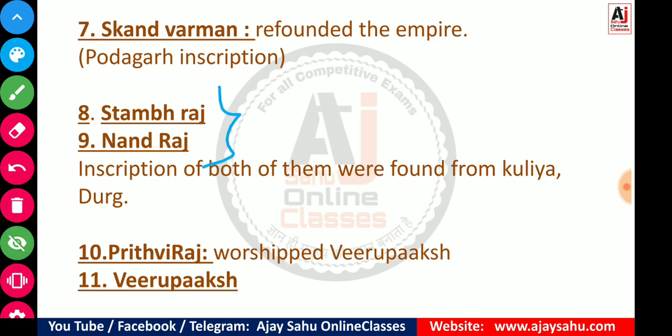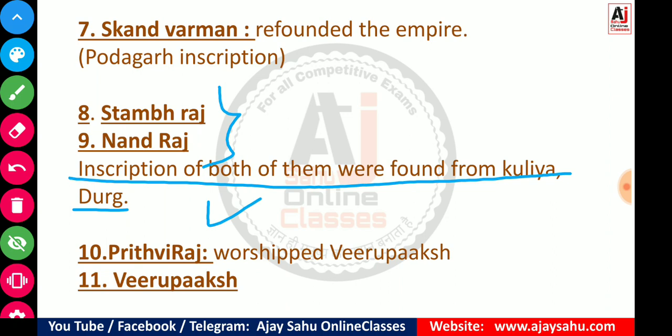Next we have Stambhraj and Nandraj — remember them as a pair. The inscriptions of both were found from Kuliya Durg. After them come Prithvi Raja and Viru Baksh. Prithvi Raja was a worshipper of Virubaksh — a form of God Shiva — and named his son Viru Baksh after that deity. So the order is: Stambhraj, Nandraj, then Prithvi Raja, and Viru Baksh.